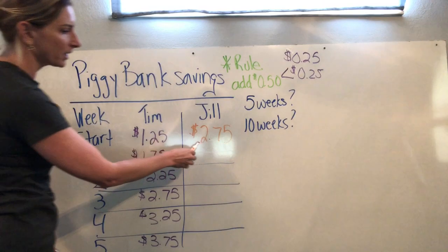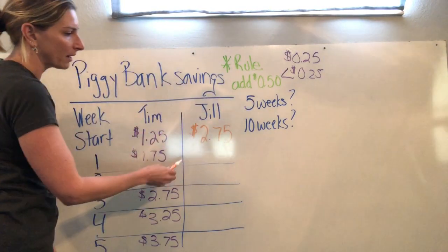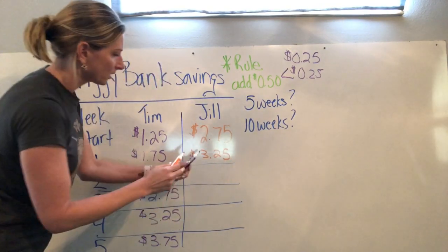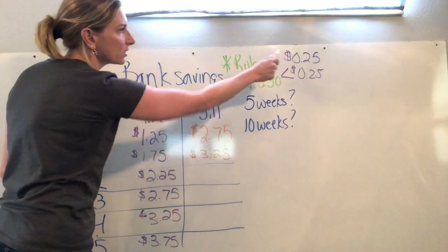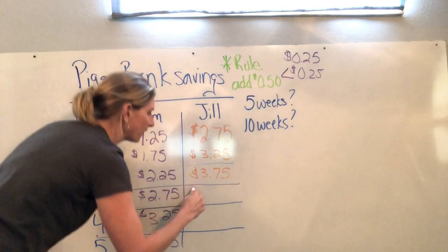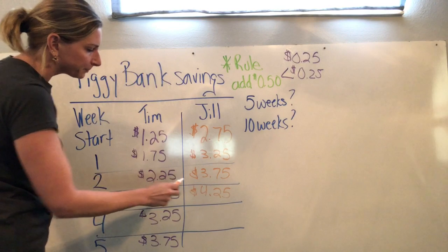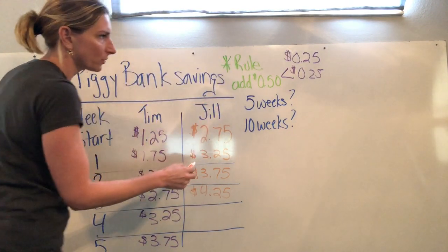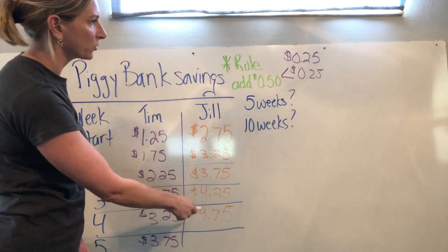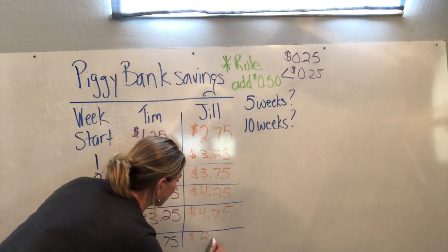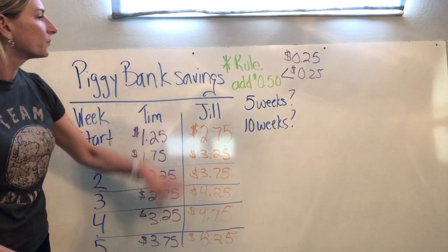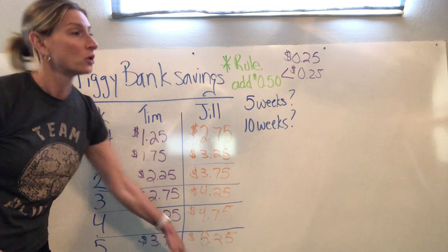Now let's look at Jill. Jill starts with $2.75 and we add two 25s each week: week one is $3.25, week two is $3.75, week three is $4.25, week four is $4.75, and week five is $5.25. After five weeks, Tim ends up with $3.75 and Jill ends up with $5.25.